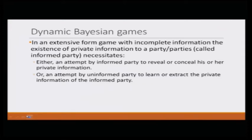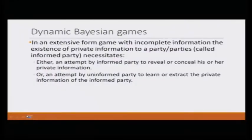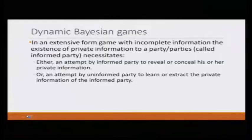Dynamic Bayesian game is the other name given to the extensive form game with incomplete information. Here, different players may have different types, and one of the players may have some private information. The informed party — the party with private information — will either try to reveal or conceal that private information depending on its strategic interest. Alternatively, the uninformed party may attempt to learn or extract the private information from the informed party.